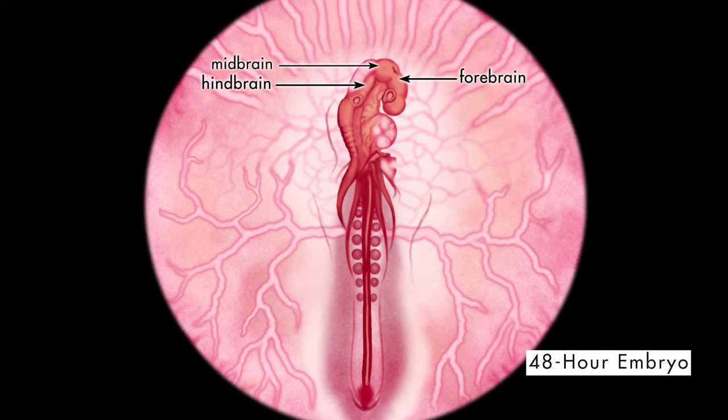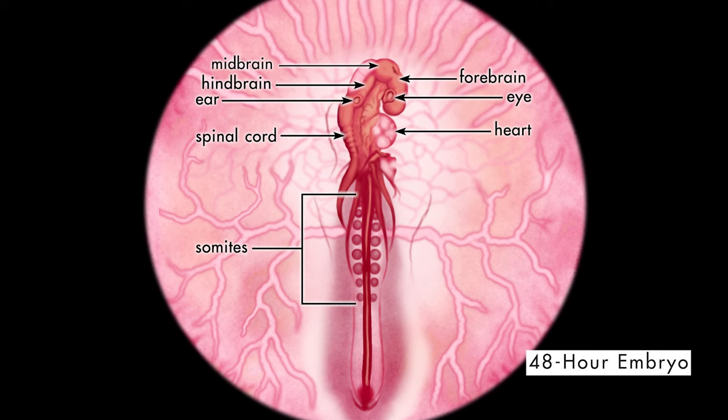Behind the brain, we can see the developing eye and ear. Descending from the brain on the left side of the image is the spinal cord. Near the midsection of the embryo on the right side of the image, we can see the heart. We can still see the somites in this stage of development. The tail bud, which will become the chick's tail and tail feathers, is also developing.